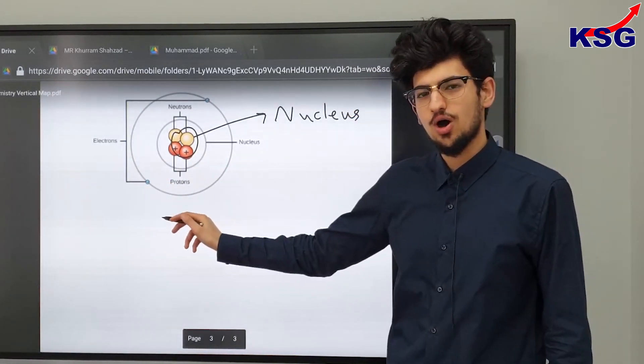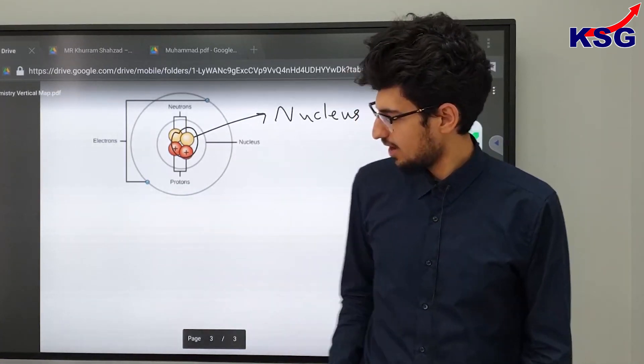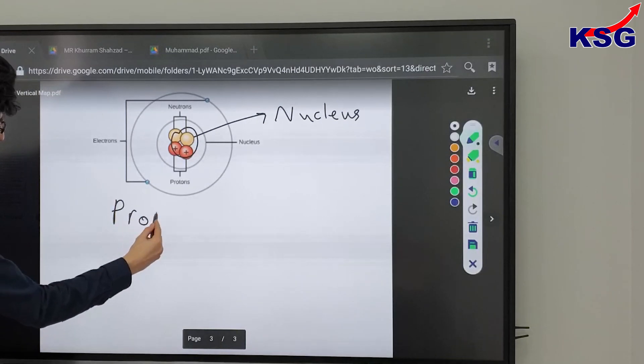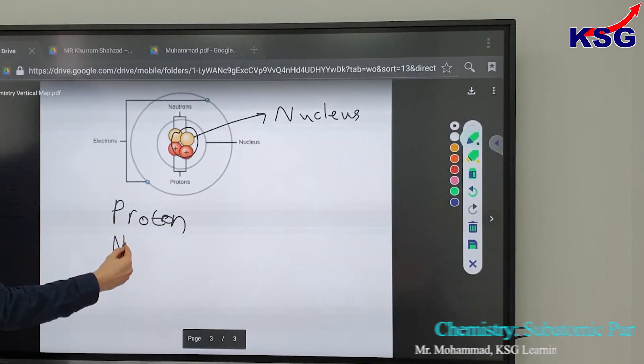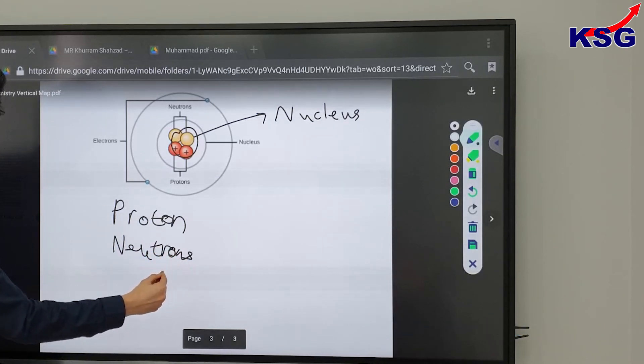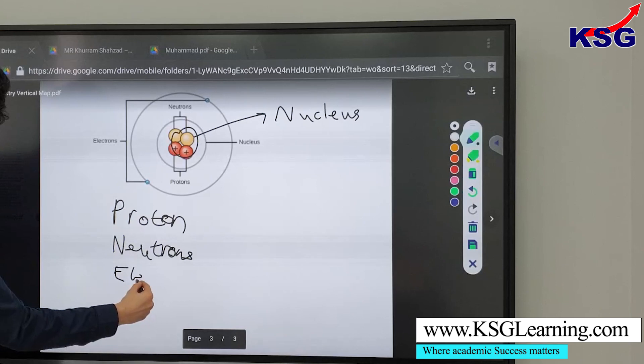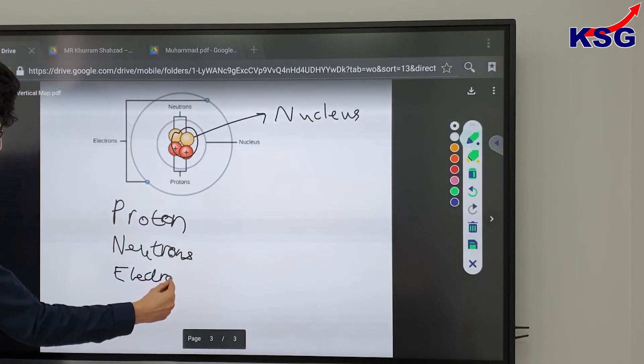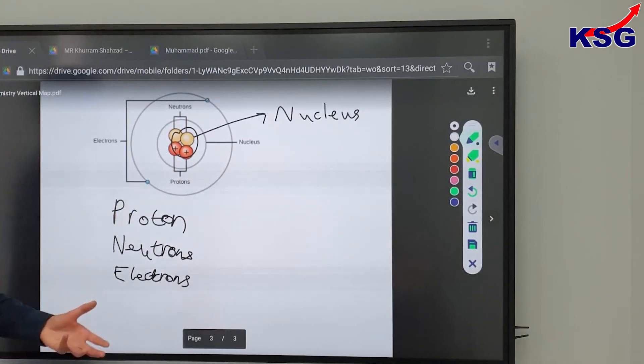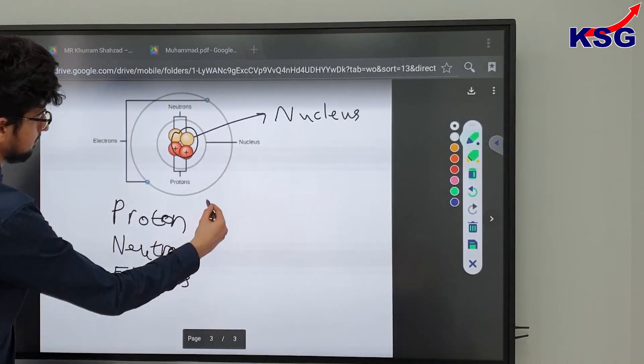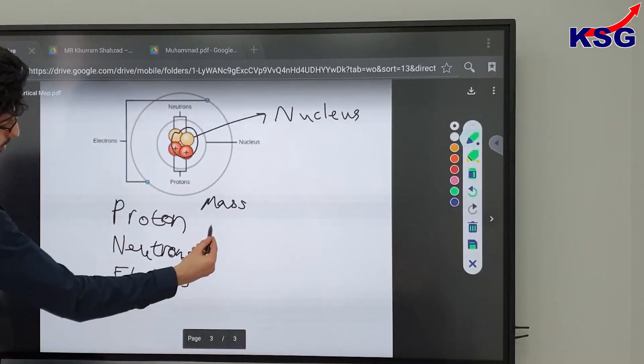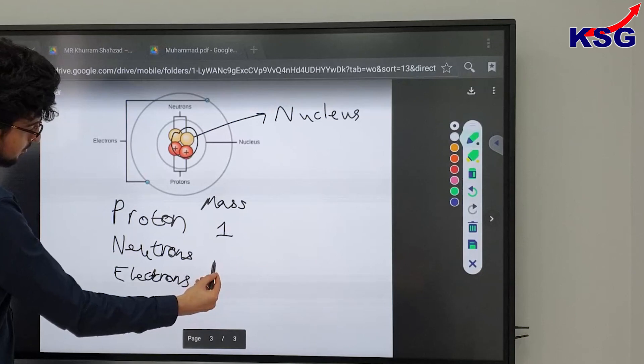Okay, now what are the properties of these subatomic particles? Well here, there are two key features that we should keep in mind. Firstly, we need to be discussing their size, or their mass rather. So the mass of a proton is about equivalent as the size of a neutron.